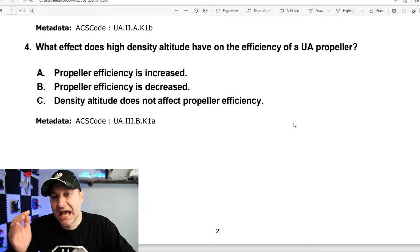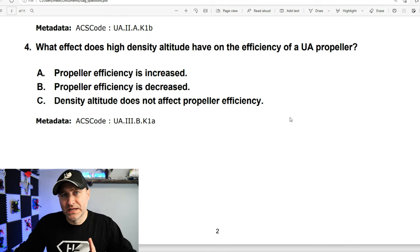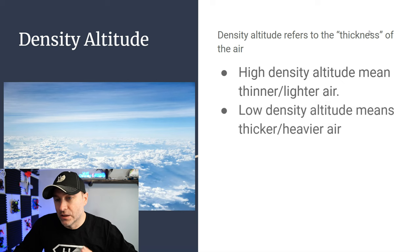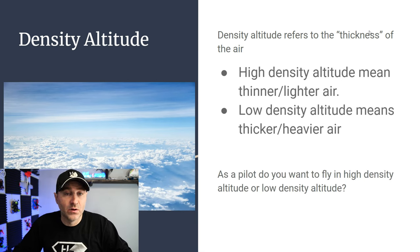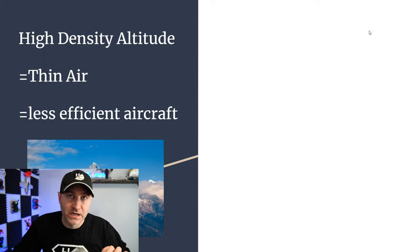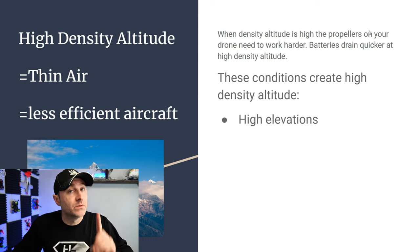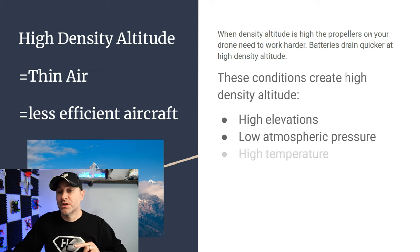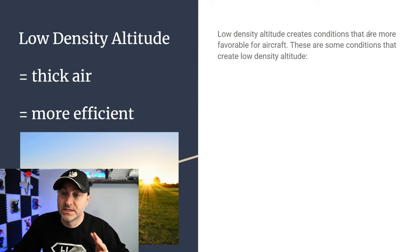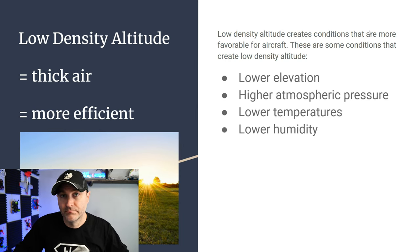What effect does high density altitude have on the efficiency of a UA propeller? High density altitude is the same as high altitude. Density altitude is the thickness of the air — high density means lighter, thinner air; low density means thicker, heavier air. Thin air means less efficient aircraft, so you don't want to fly in high density altitude — your batteries will drain quicker. High elevations, low atmospheric pressure, high temperature, and high humidity create high density altitude. Low elevation, high atmospheric pressure, low temperature, and low humidity create low density altitude, where you want to fly.